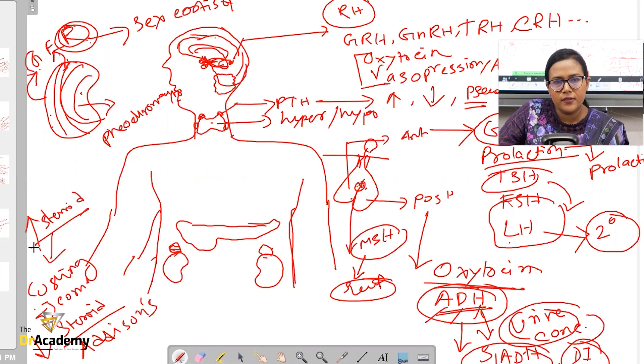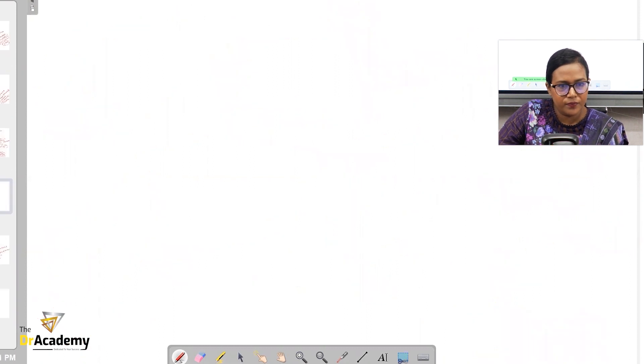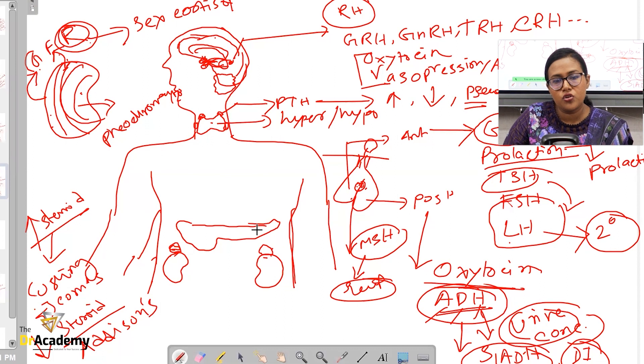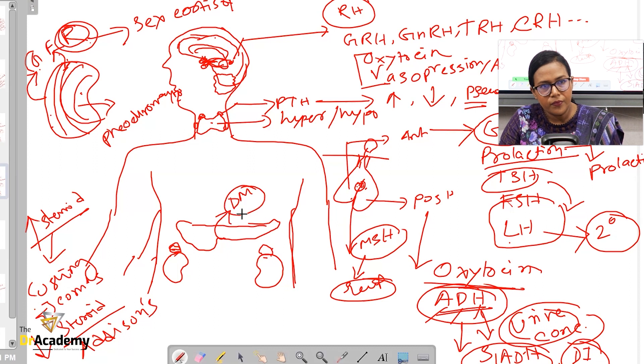From the pancreas, which endocrinological problem is most predominant? Diabetes - it can be both type 1 or type 2 diabetes. Any other? Insulinoma. Very good. So insulinoma and both type 1 and type 2 diabetes.